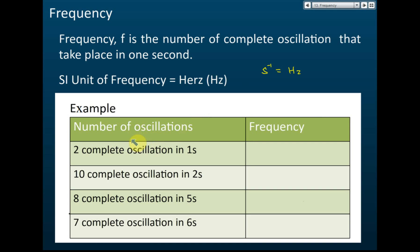For example, if a pendulum makes 2 complete oscillations in one second, the frequency is 2 hertz. Another example: 10 complete oscillations in 2 seconds — the frequency is 5 hertz, because 10 divided by 2 gives 5 complete oscillations per second.